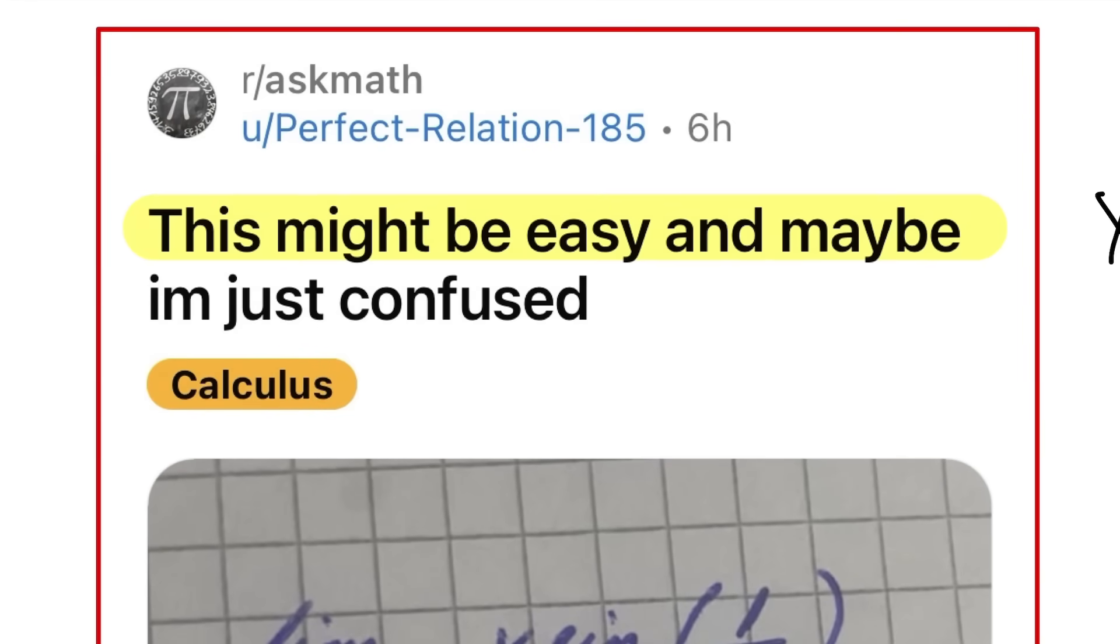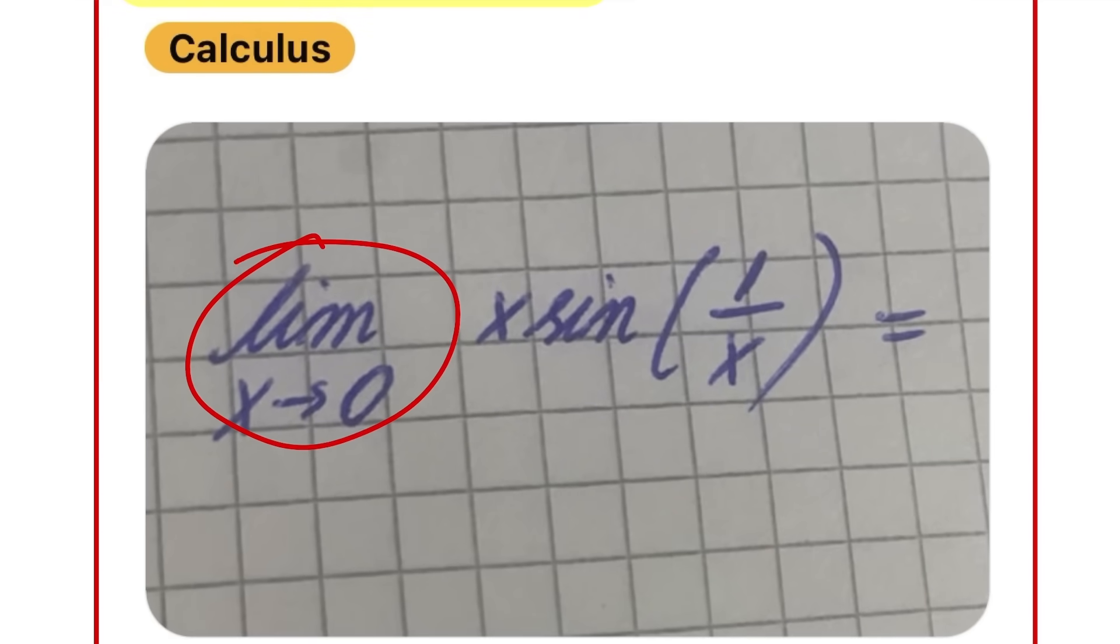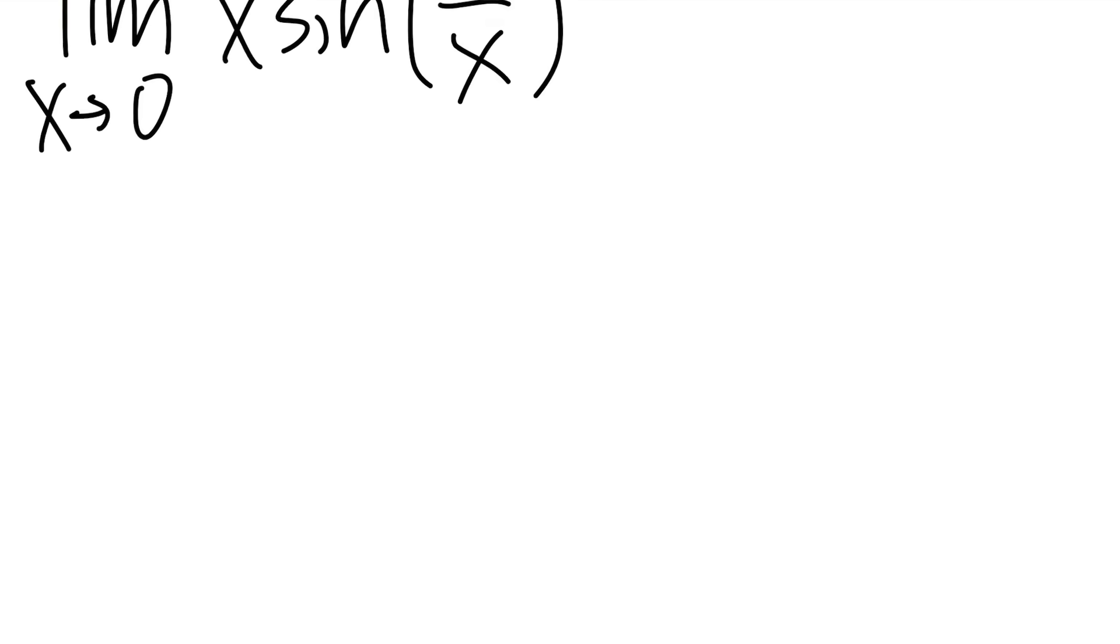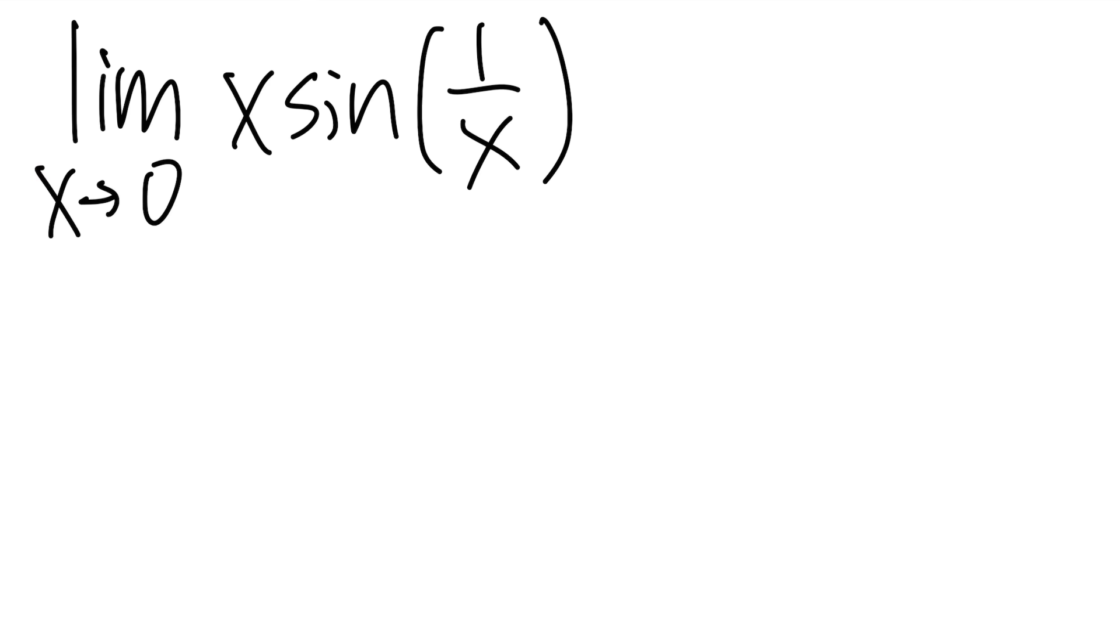This might be easy, and maybe I'm just confused. Well, let's take a look. Here we are talking about the limit as x approaching 0 of x times sine of 1 over x. So what do we do? Like always, let's go ahead and plug in 0 into all the x's first.